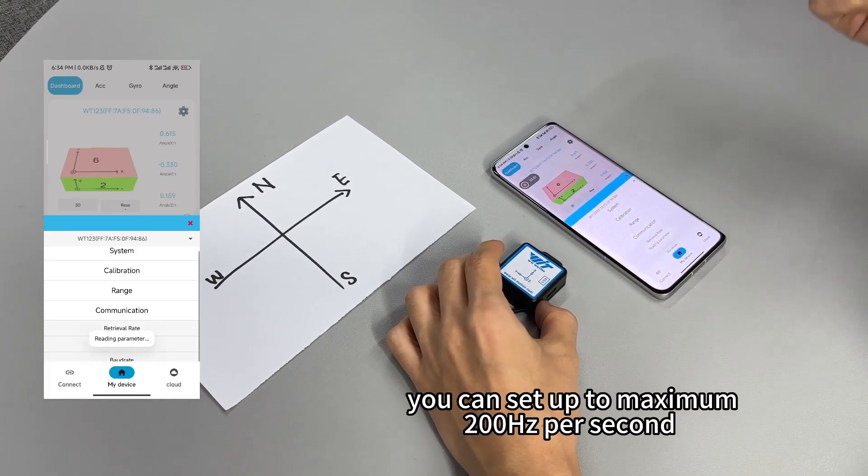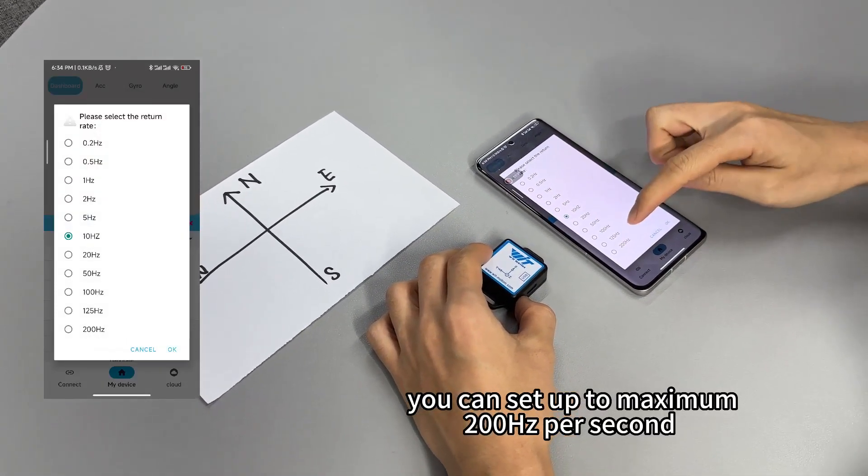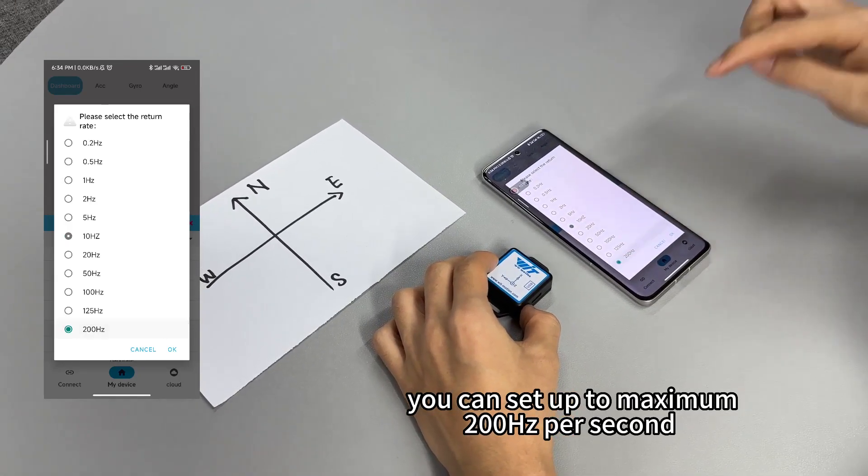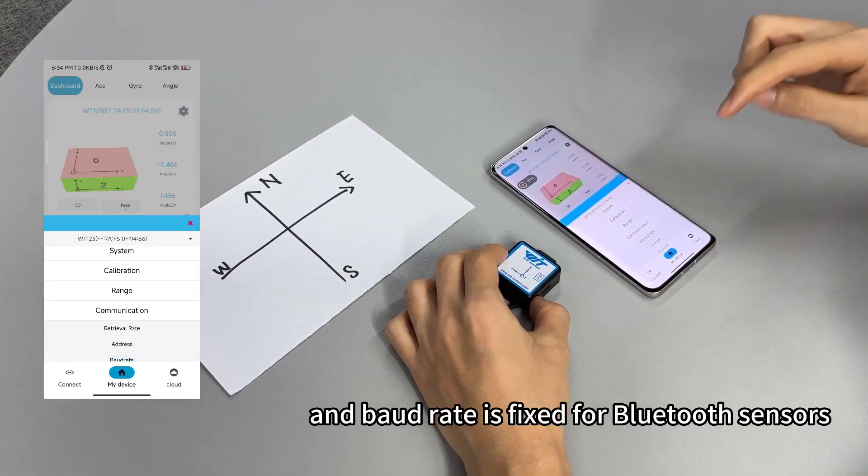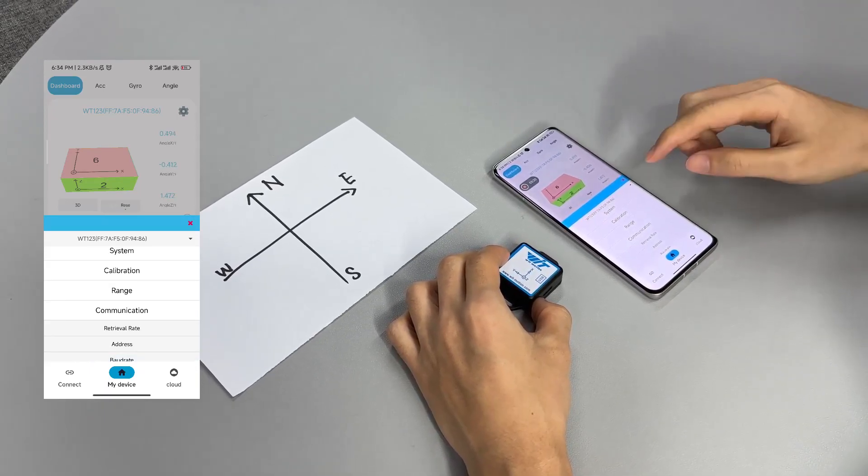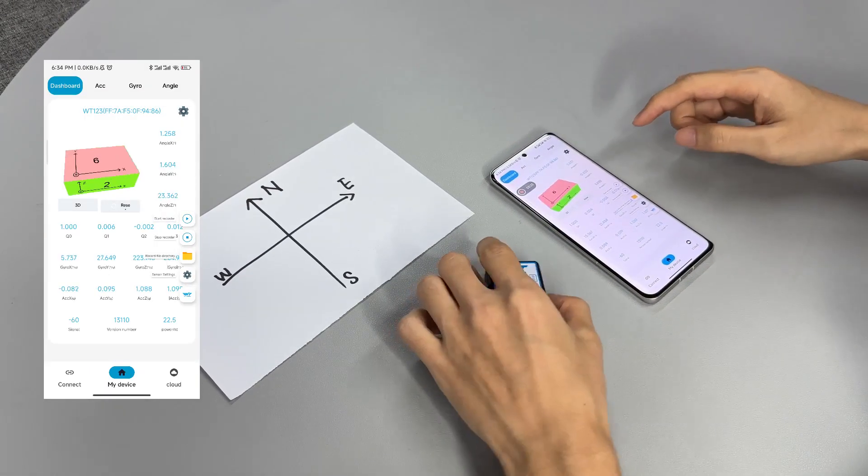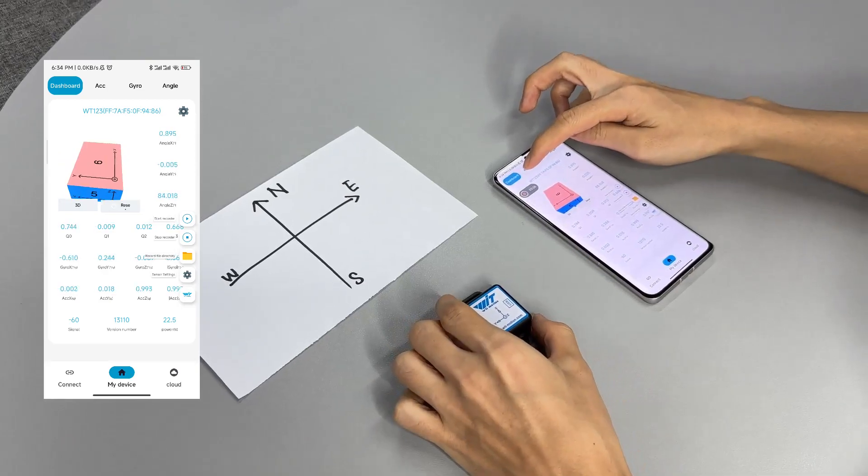You can set to up to maximum 200 hertz per second. And the baud rate is fixed for Bluetooth sensors. Okay, and then we close this one. Okay, let's show the sensor interface.